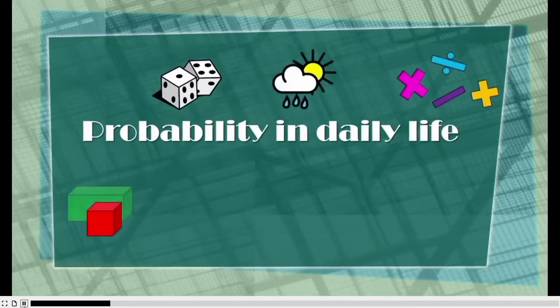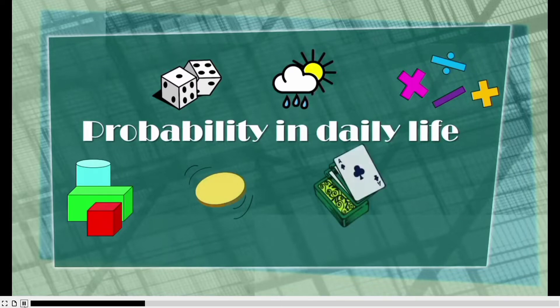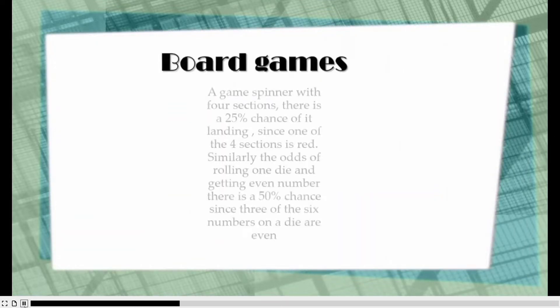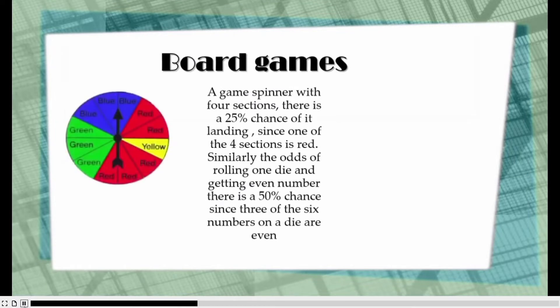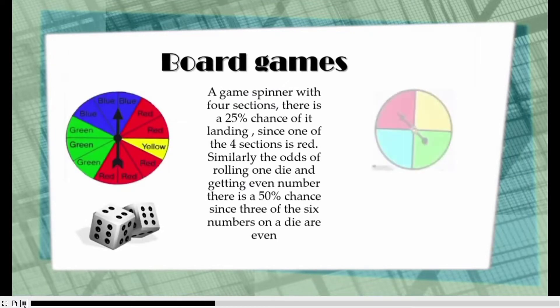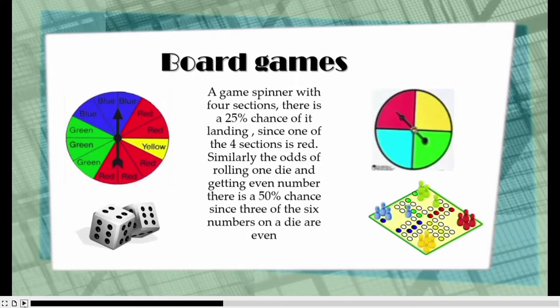In this video we are going to study about some basic applications of probability in daily life. First one: board games. A game spinner with four sections has a 25% chance of landing on any one section. Similarly, the odds of rolling a die and getting an even number is 50%, since three of the six numbers on a die are even.